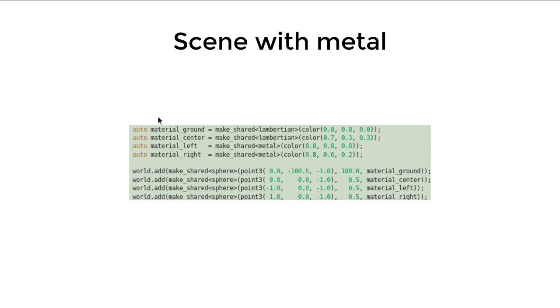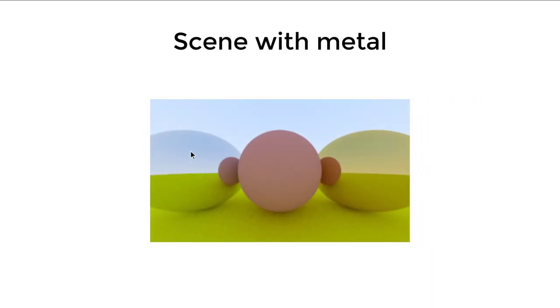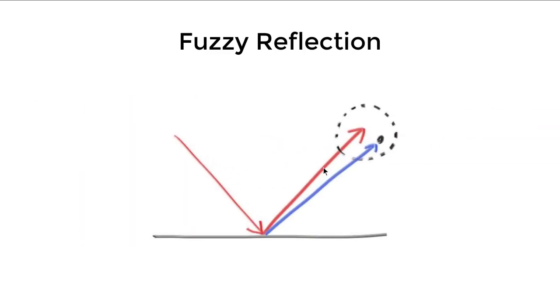And then, we can make a scene with a bunch of metal material in it. In this case, we add two metal ones here, and another one is here. And we still keep the two Lambertian, kind of plastic like sphere, in here and underground.